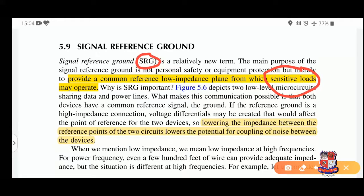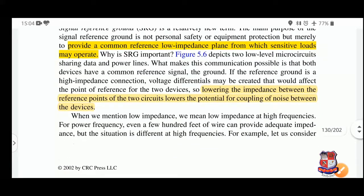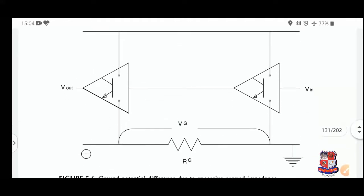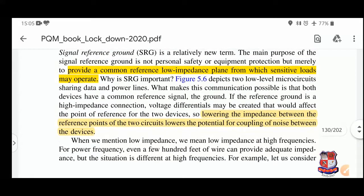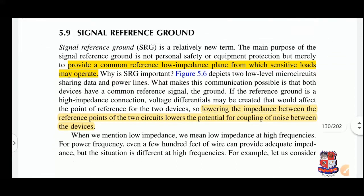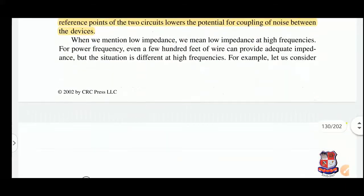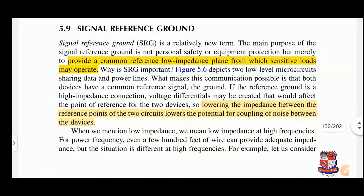To understand why sensitive loads matter, consider a figure showing two different micro-level circuits sharing a common reference ground, where ground potential differs due to excessive ground impedance. Through communication, data or signals are transferred from one circuit to another. In between, there is a ground resistance RG — a common reference ground. What makes this communication possible is that both devices share a common reference signal, which is the ground.